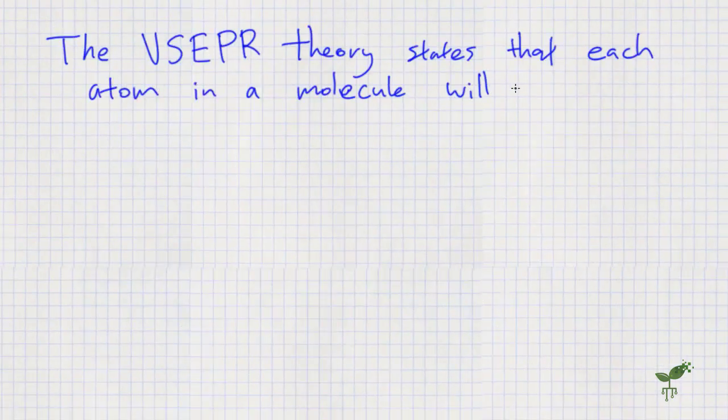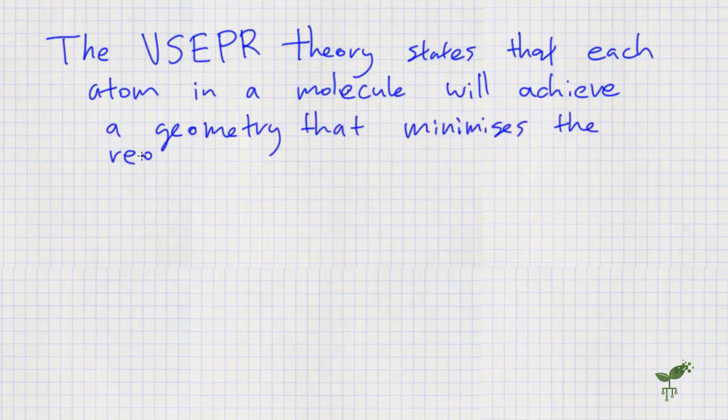The Vespa theory states that each atom in a molecule will achieve a geometry that minimizes the repulsion between electrons in the valence shell of that atom.